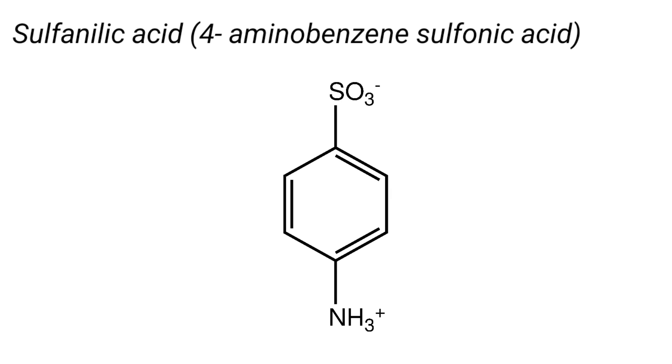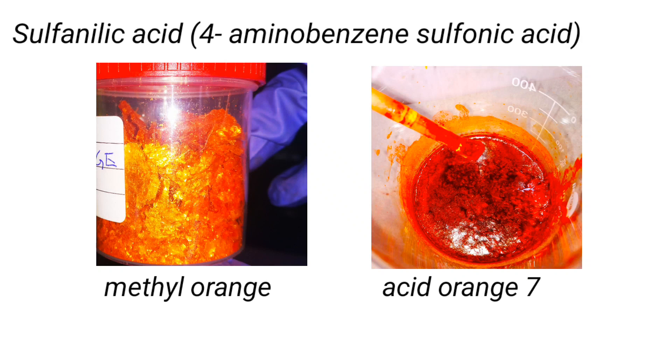Sulfanilic acid or 4-aminobenzene sulfonic acid is an off-white crystalline solid. It's mainly used as a precursor for making azo dyes like methyl orange and acid orange 7, both of which I have done before. Links are in the description.